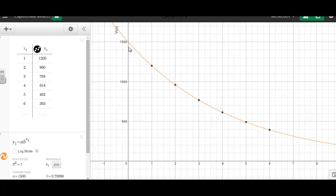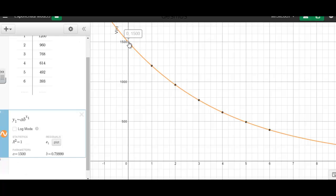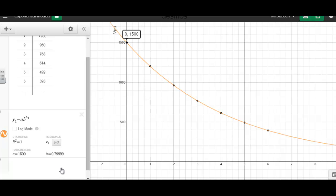Another neat thing is it gives us our initial value. It shows us that we have an initial value here of 1500 when n is equal to zero. On the left here, you can also see that it gives us our b value. The b value here is 0.79999, which is very, very close to 0.8.